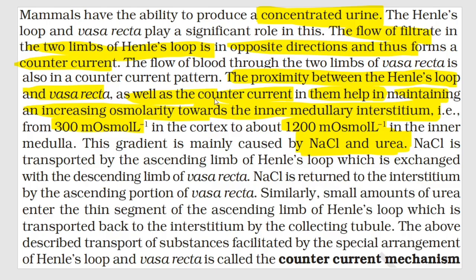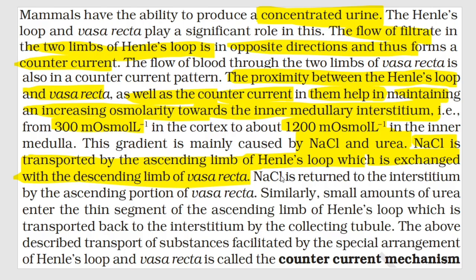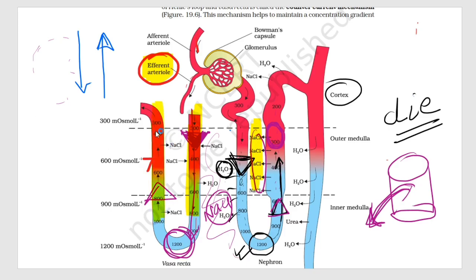Here is a very beautiful NCERT line: NaCl is transported by the ascending limb of Henle's loop, which is exchanged with the descending limb of vasa recta. NaCl is returned to the interstitium by the ascending portion of vasa recta. So ultimately the ion increasing in the interstitium is sodium chloride. If sodium chloride is accumulating in the interstitium, a concentration gradient is being set.